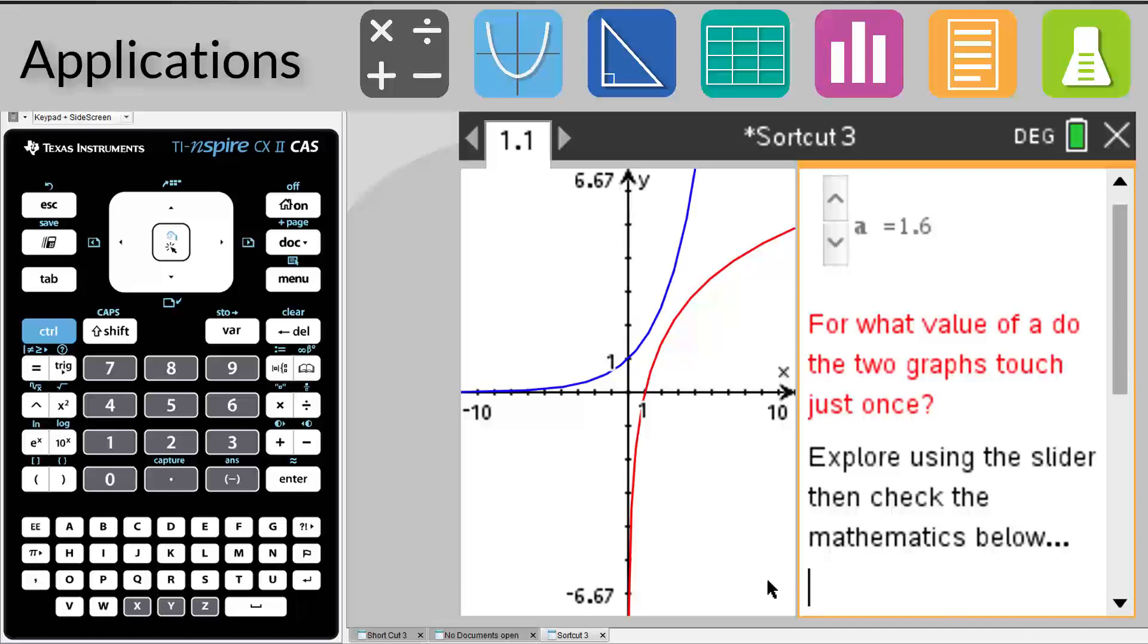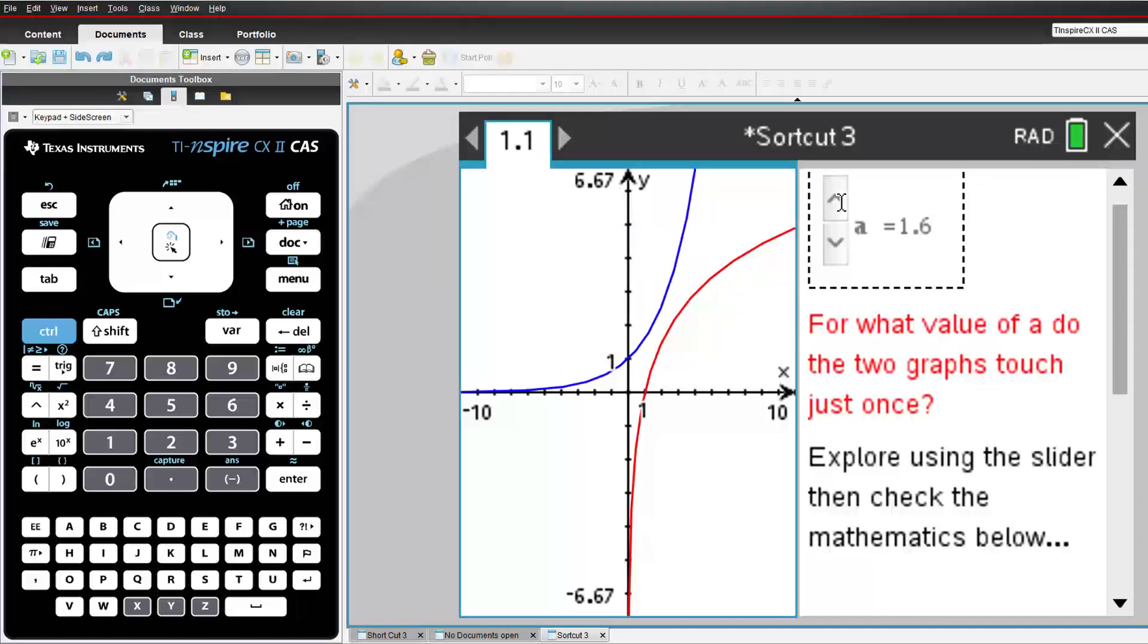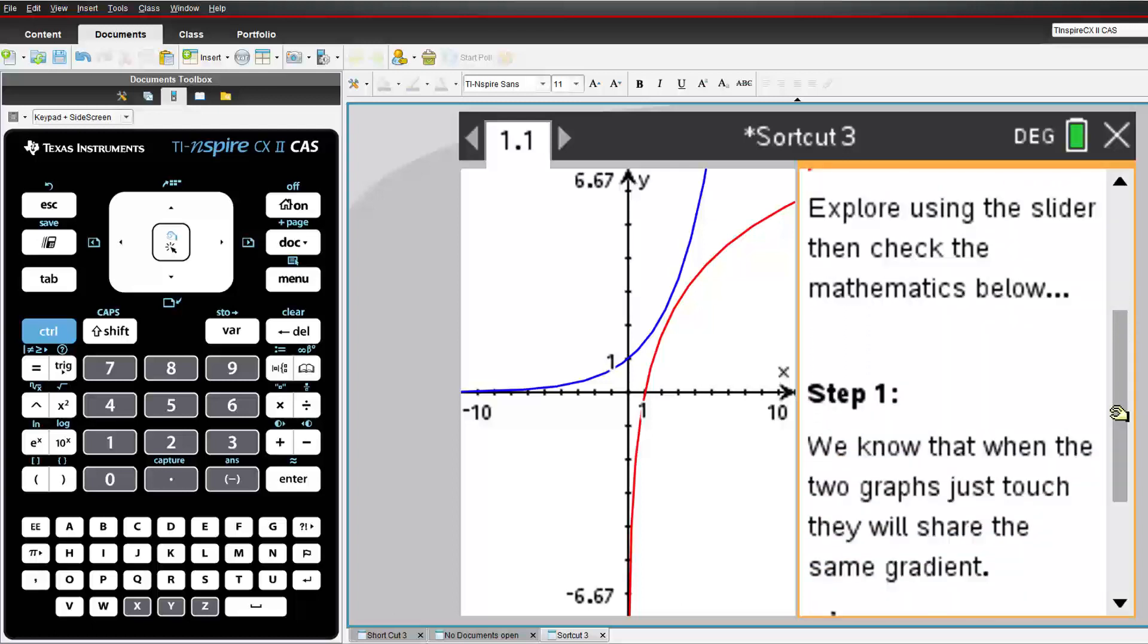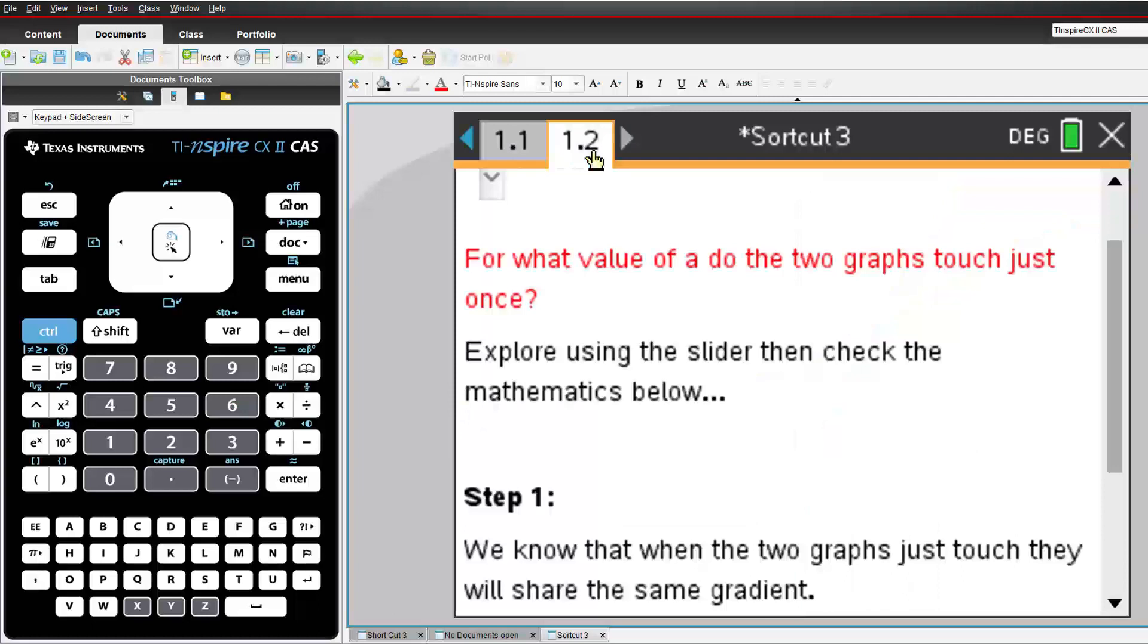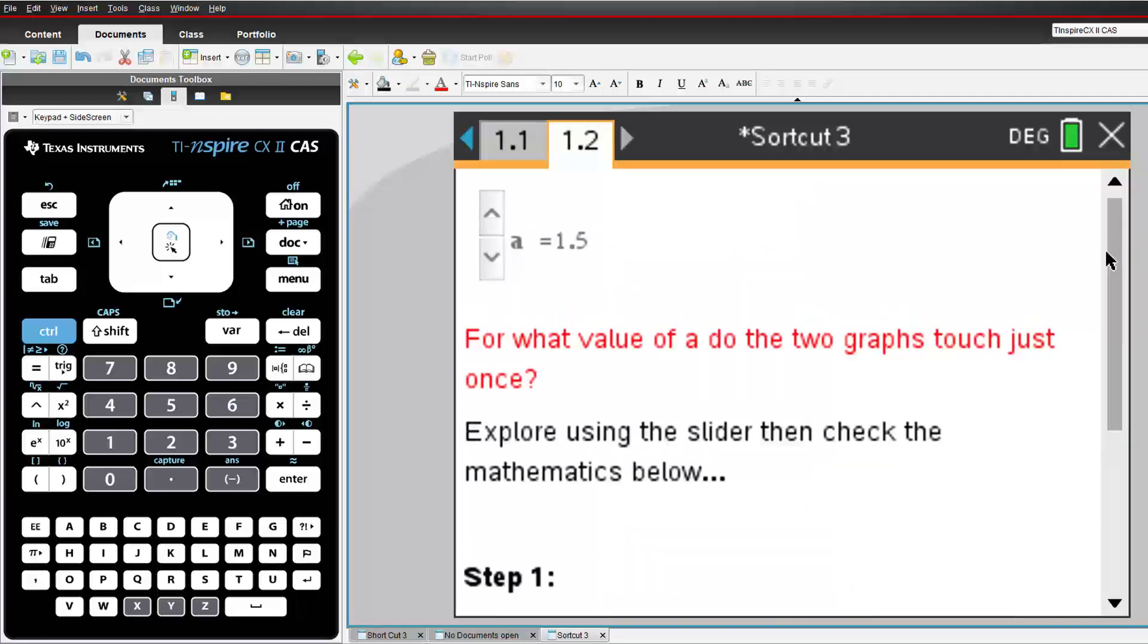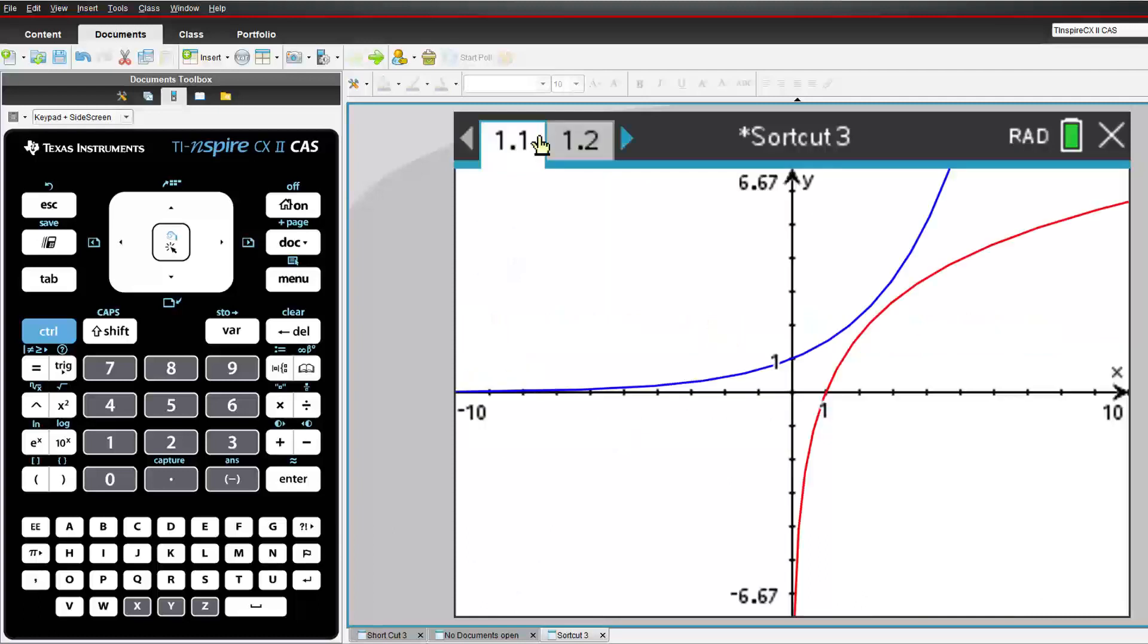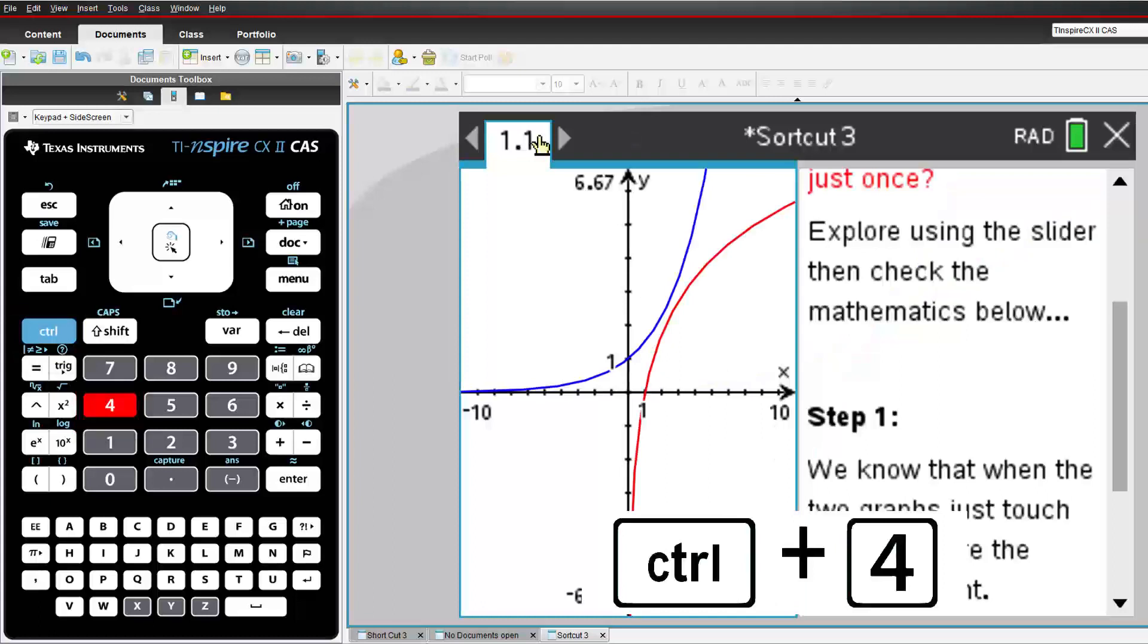Sometimes you may have two applications running on the same page. Here I have a graph and some notes and calculations related to the graph. There are more calculations further down the page. I could scroll through them. Alternatively, I can ungroup the two pages by pressing CTRL and 6 to ungroup. Notice now that I have two pages, each one has just one application. To regroup or group two pages, navigate to the first one and press CTRL and 4.